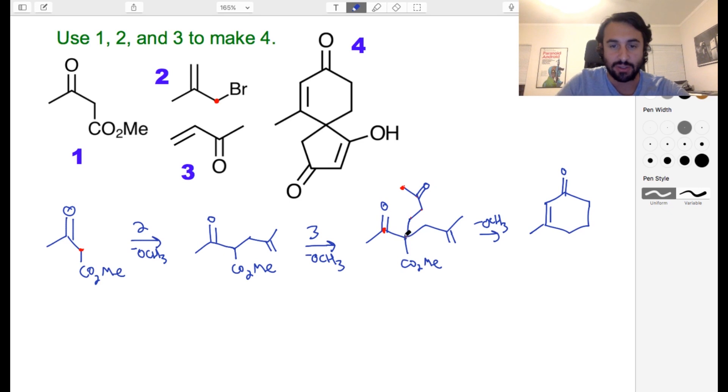This is the carbon that - so this carbon has two other things on it. We've got the pi bond there and also CO2Me. That was kind of the trickiest part - to be able to see after doing that enolate chemistry that we're going to do that intramolecular aldol condensation and get that six-membered ring.